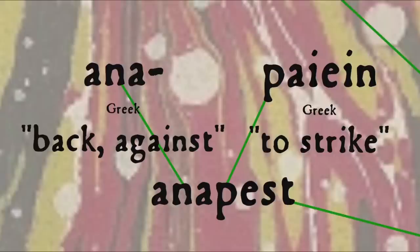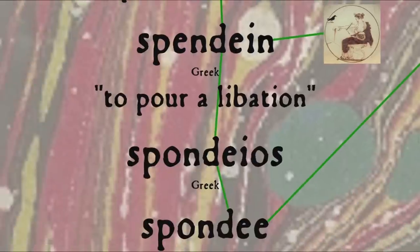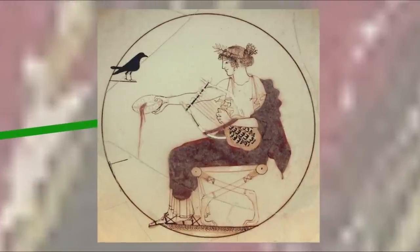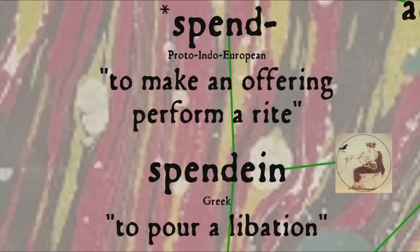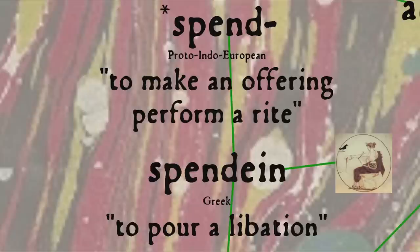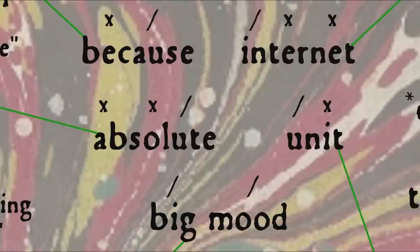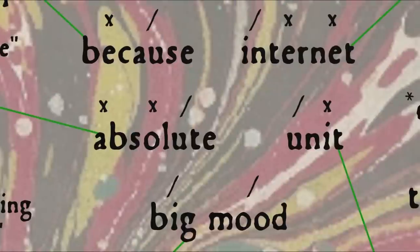And the final main type of foot is the spondee, made up of two stressed syllables, as in the phrase big mood. Spondee comes from Greek spondeios, from the verb spendein, to pour a libation, in other words to make a ritual offering of a drink, from the Proto-Indo-European root spend, to make an offering, perform a rite, hence to engage oneself by a ritual act, which also gives us such words as sponsor, spouse, and respond.